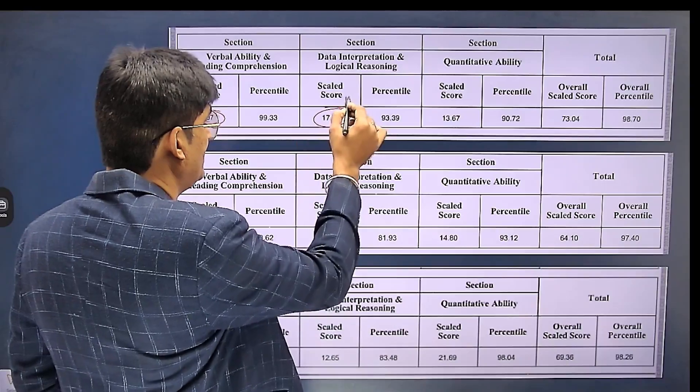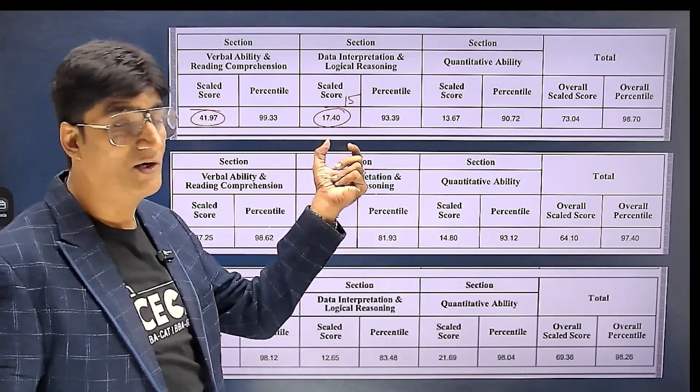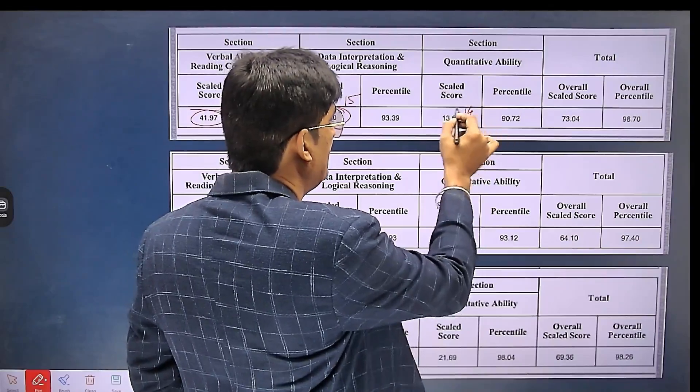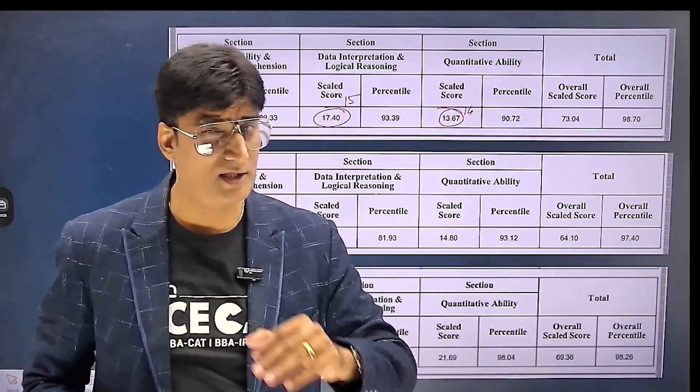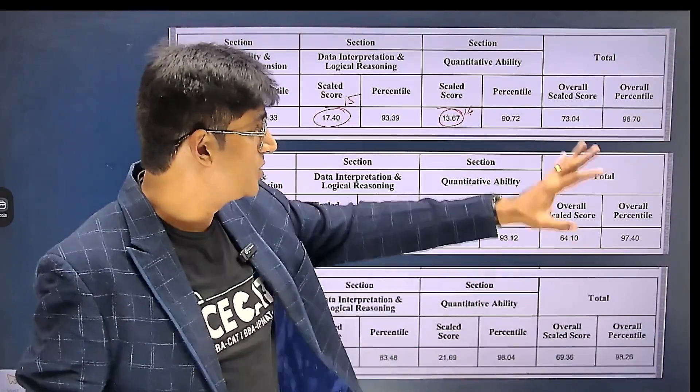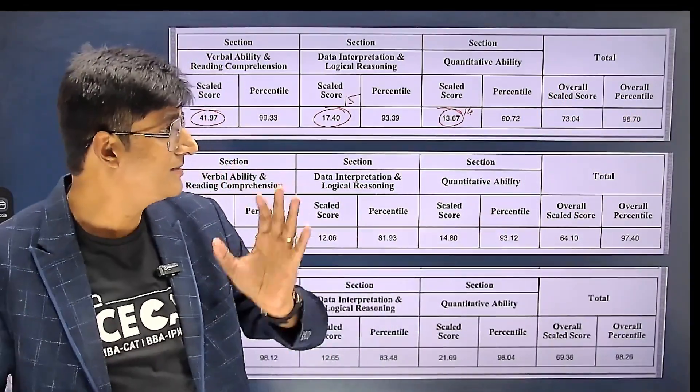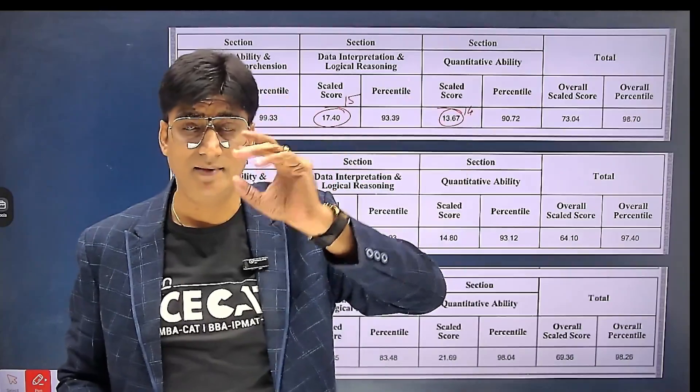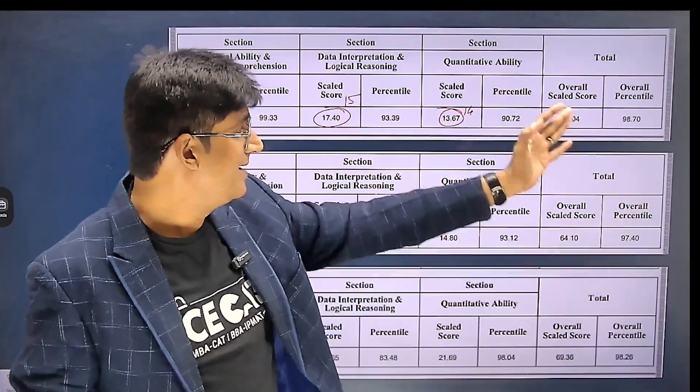In QA, students, he was getting 14 and actually it's 13.67, slightly scaled down. Overall, slot one students should celebrate because roughly 3.5 to 4 marks scaled up in slot one, and at a score of 73 this boy is getting 98.7 percentile.